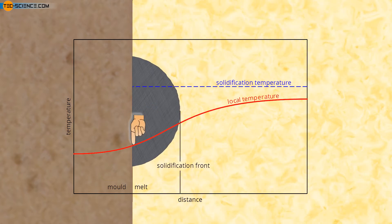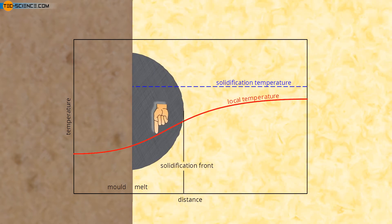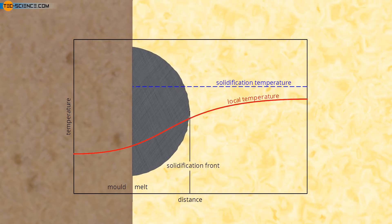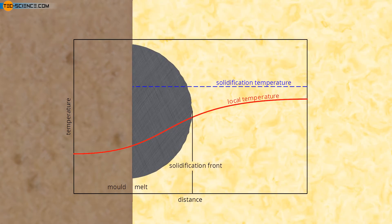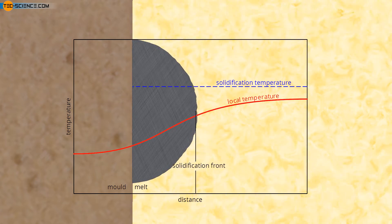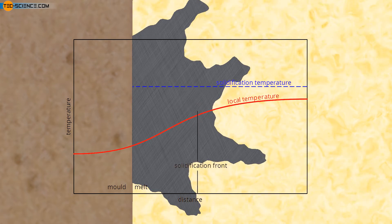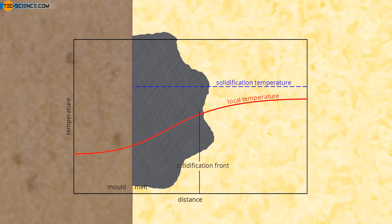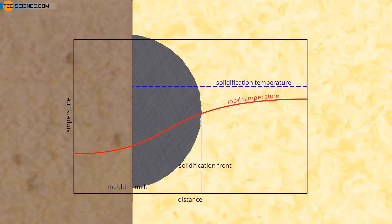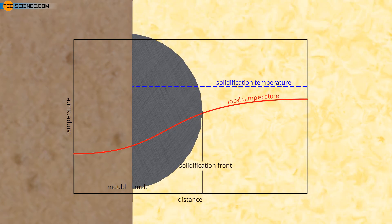A positive temperature gradient is therefore obtained in the direction of the melt. This is especially the case when the melt is only slightly supercooled. The crystal then grows into a region with a higher temperature. Any branching of the crystal that may occur would then remelt. The solidification front therefore remains relatively flat. This is then also referred to as a stable growth front.